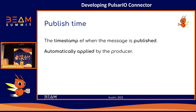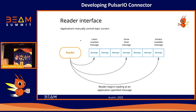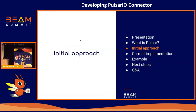Pulsar has two client interfaces. The first is the consumer interface, which automatically handles cursors inside the topic, so you do not have to worry about the current position — Pulsar does it by default. The second is the reader interface, which allows the implementation in Beam to handle cursors manually. With some context about Pulsar established, what was the initial approach for this implementation?